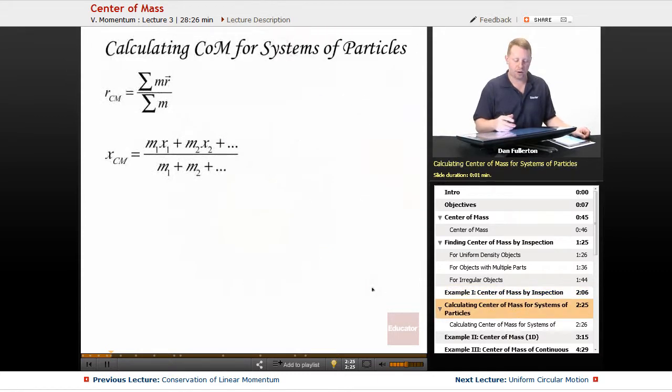If we have a system of particles, however, we need to get a little bit more detailed. The position vector to the center of mass is the sum of all the little objects, their mass times their position divided by the total mass of your system.